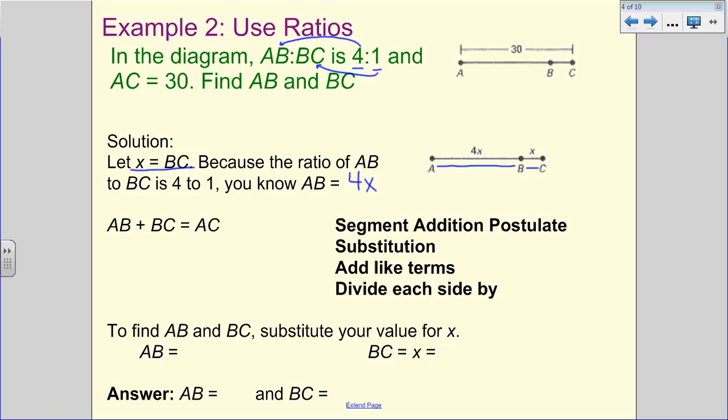Now we want to substitute what we know. Well, we labeled AB with 4X in the diagram. We labeled BC with X in the diagram. And we know that AC from this top diagram is 30. So that equals 30. We're going to add our like terms. This is 5X is equal to 30. And then we're going to divide each side by 5.